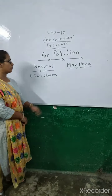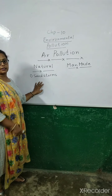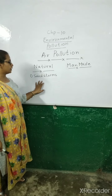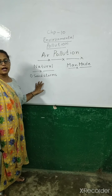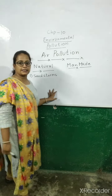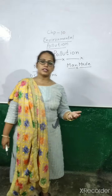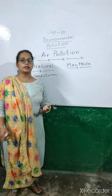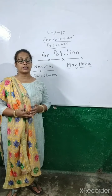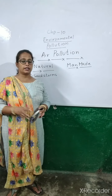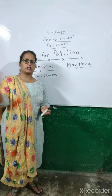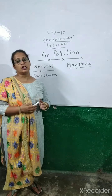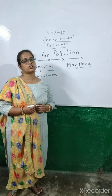We are going to talk about the natural causes first. What are the natural causes of air pollution? The first is sandstorms. Sandstorms occur in desert areas where the air comes with a lot of speed along with a lot of dust. So that is the sandstorm.